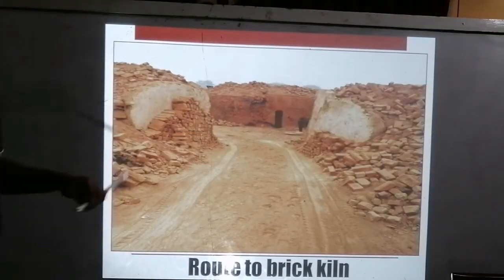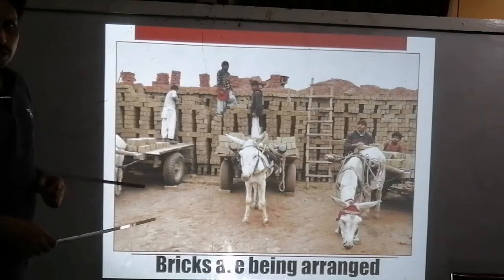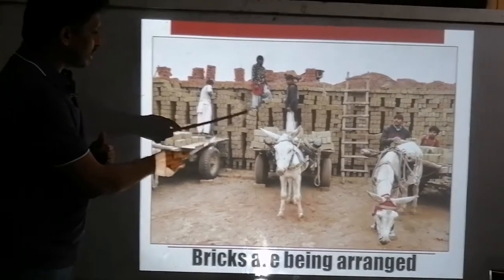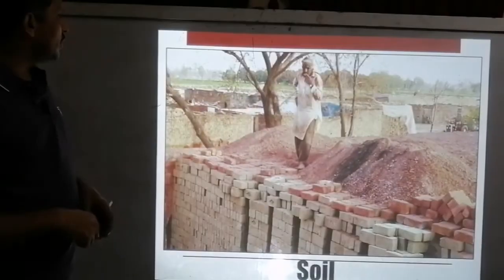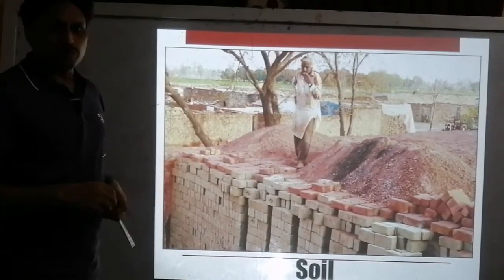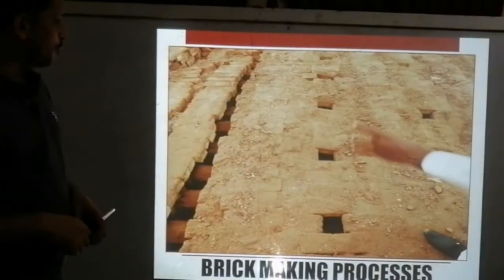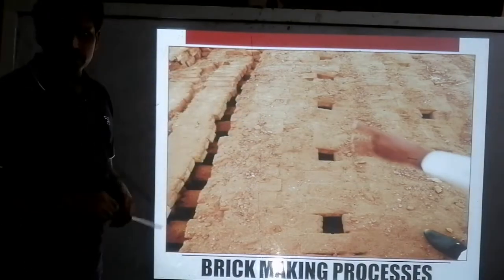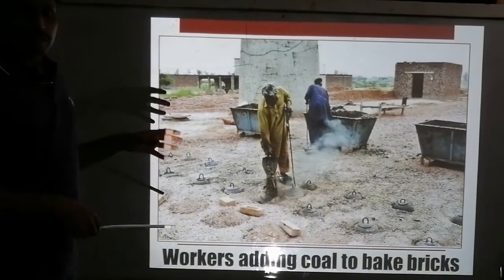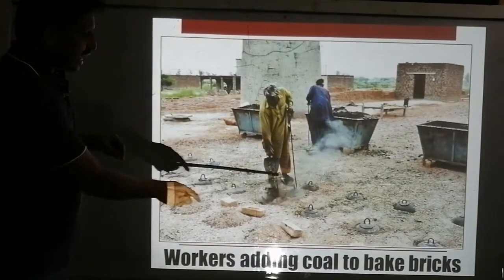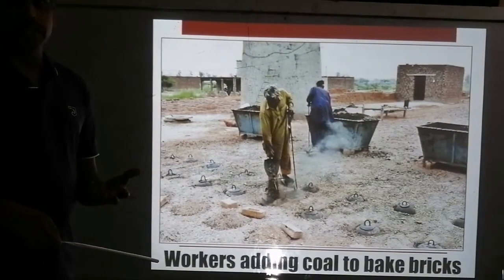The dried bricks are transported to the kiln using donkey carts along a route to the kiln. These bricks are then arranged in columns inside the kiln. It is important to note that there are gaps between these columns of bricks. The arrangement is then covered with waste stony soil, but the gaps are left open.